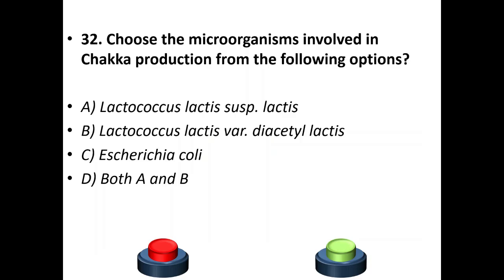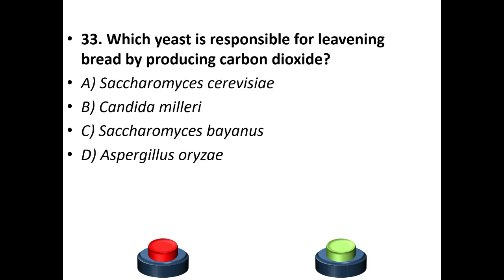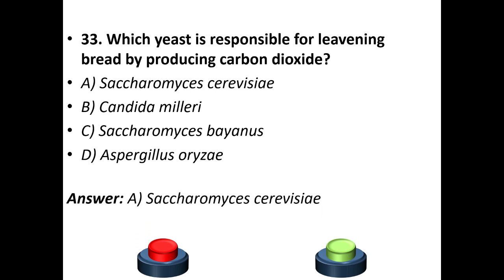Thirty-second question: choose the microorganisms involved in chakka production. A: Lactobacillus lactis subsp. lactis. B: Lactobacillus lactis var. diacetylactis. C: Both A and B. Answer is C — both A and B. Thirty-third question: which yeast is responsible for leavening bread by producing carbon dioxide? A: Saccharomyces cerevisiae. B: Candida milleri. C: Saccharomyces bayanus. D: Aspergillus oryzae. Answer is A — Saccharomyces cerevisiae.